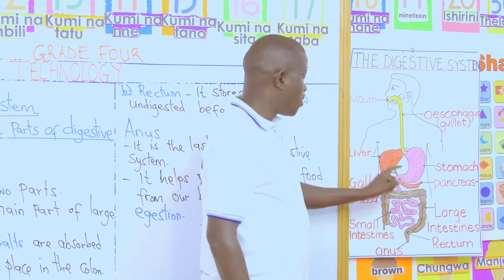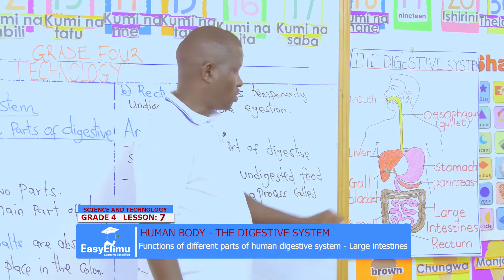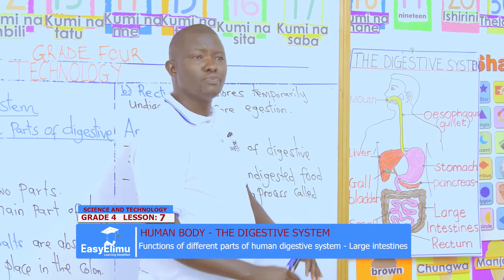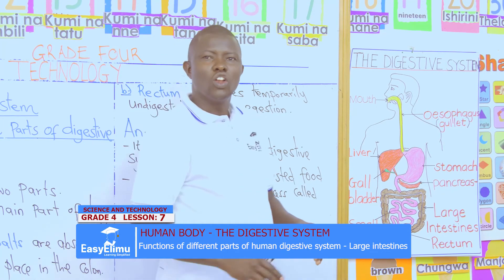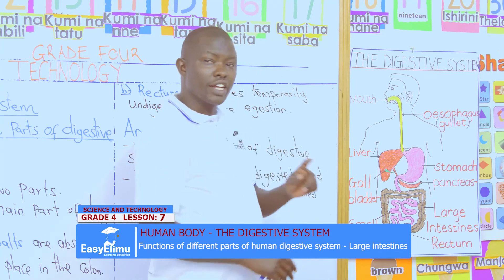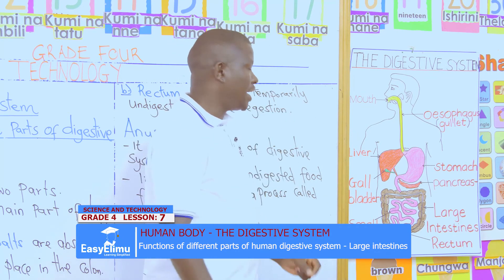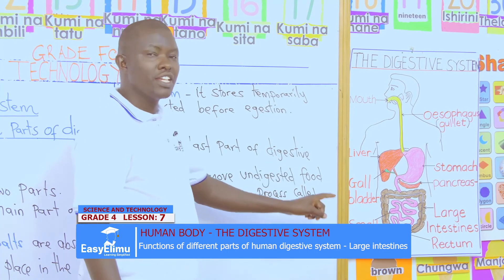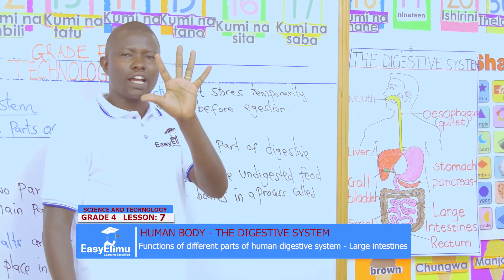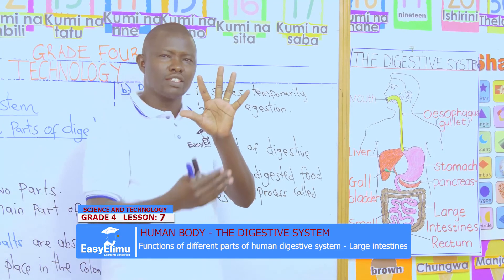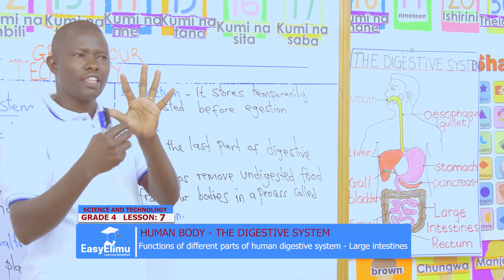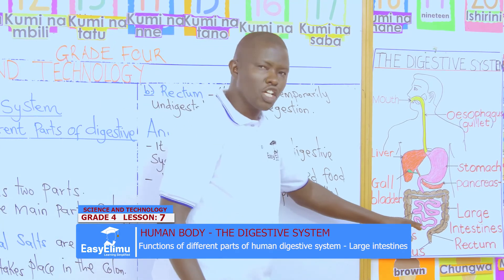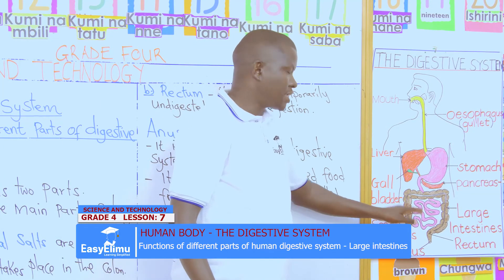Then the food goes down to the lower part of the small intestine — the largest part, which we call the ileum. The ileum is very long, about seven meters, long and coiled, to increase the surface area for redigestion and absorption of food. To make absorption easier, the small intestines have finger-like projections called villi that look like our fingers, increasing the surface area for easy absorption. Digestion of food ends at the small intestines.